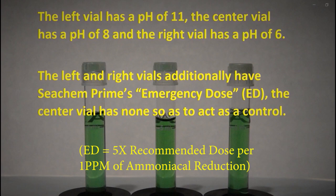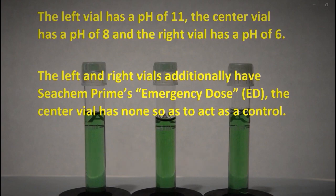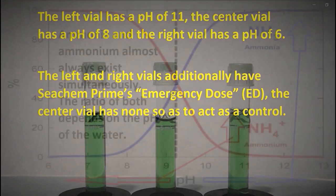The right vial has a pH of 6. The left and right vials additionally have Seachem Prime's emergency dose, and the center vial has none, so as to act as a control.